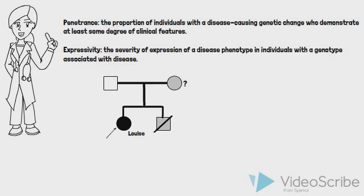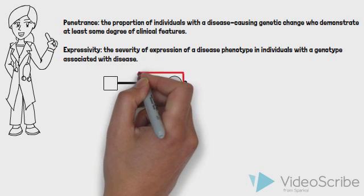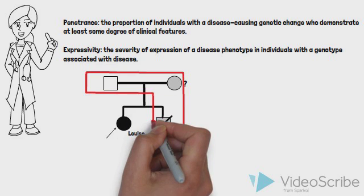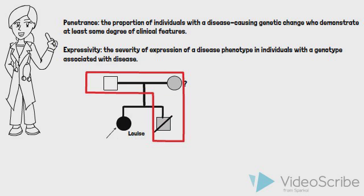In the case of long QT syndrome, all first-degree relatives of individuals with clinically diagnosed long QT syndrome or a known mutation in a long QT syndrome gene should be referred to a cardiac arrhythmia specialist and medical geneticist. This is because the disease is treatable and can be clinically silent until a catastrophic event occurs. You make sure to discuss this with Louise and her mother. After your discussion, Louise's mother arranges to have genetic testing done for herself through your clinic. She is very grateful for all of your help and for taking the time to explain everything so clearly.